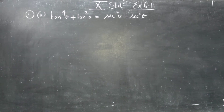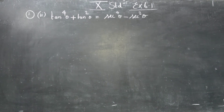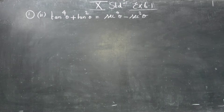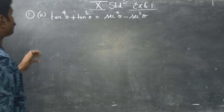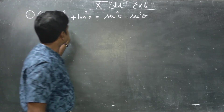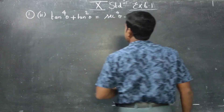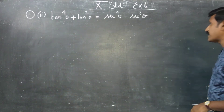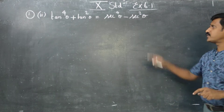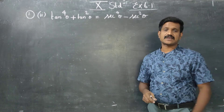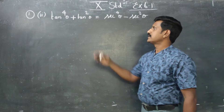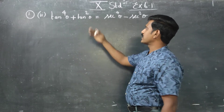Hello 10th standard students. Today we are going to see exercise number 6.1, trigonometry. We are going to prove this identity: tan power 4 theta plus tan square theta is equal to secant power 4 theta minus secant square theta. We will start from the LHS.